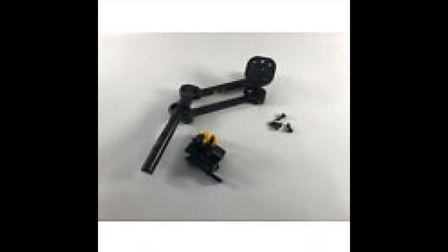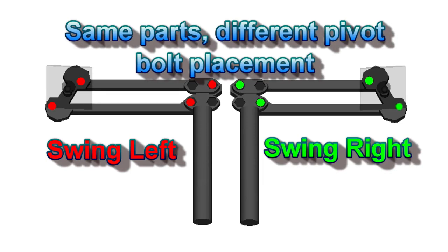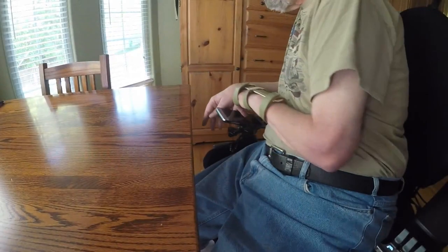The only thing wrong was the direction of the swing-away mount. The way the new mount was received, it was configured in the opposite direction than what I wanted it to swing. Not a problem. In case you are not aware, the swing-away bracket arm parts provided on the Quantum Edge chairs can be configured for the left or right side, swing-in or swing-out. All you have to do is reposition the pivot bolts to swing to your desired direction. I wanted to have the new phone mount swing inward so that I could more easily reach it with my slightly more agile left hand.